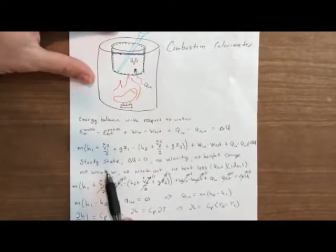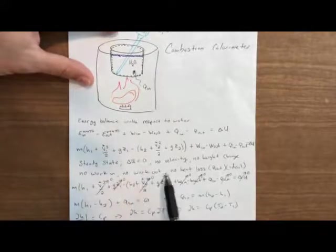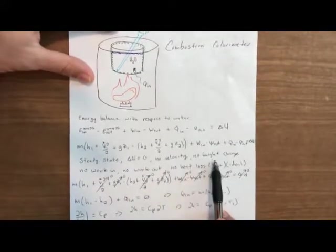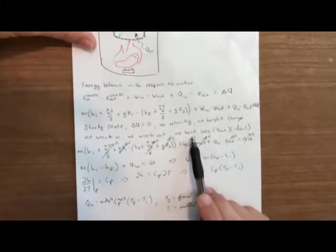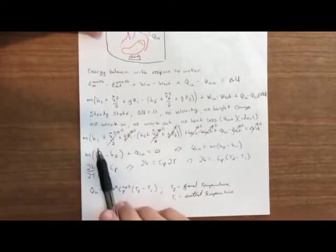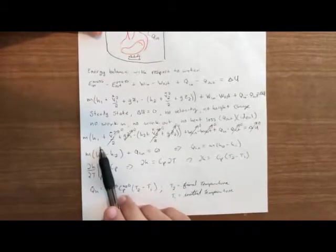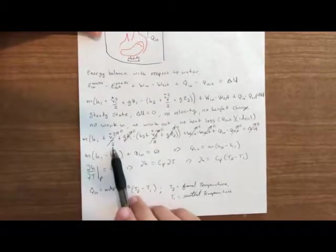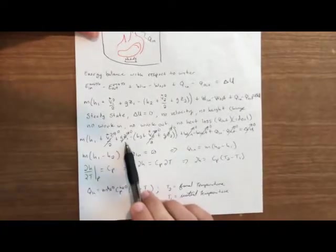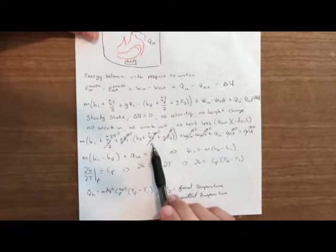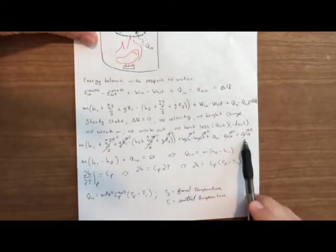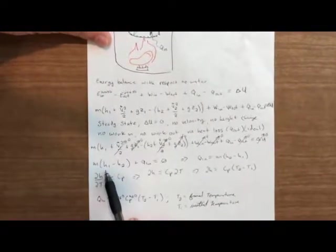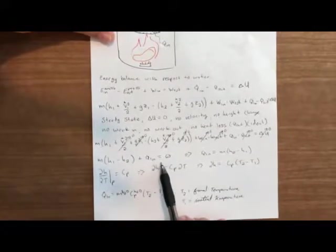Since we know this is a steady state, we can say that delta U is zero, there's no velocity, no height change, no work in, no work out, and no heat change. That leads us to this more simplified form, where we cancel out the velocities, the height changes for both the in and out state, and the work in, work out, and heat loss, as well as the delta U, which simplified down comes to the mass times H1 minus H2 plus Q in equal to zero.